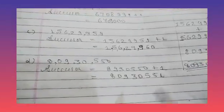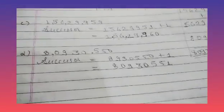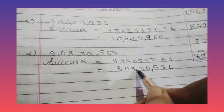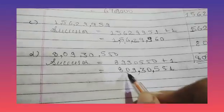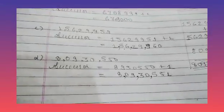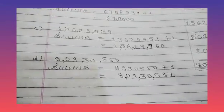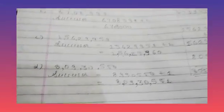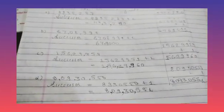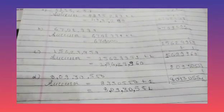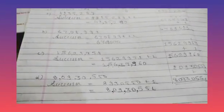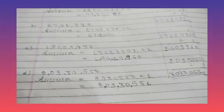We put the comma after 3 digits from the right, after 2 digits, and after 2 digits. So children, we have done parts A, B, C, and D in our classwork copy.